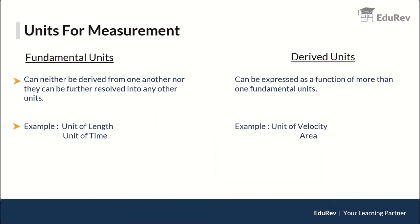Units can be defined as fundamental units and derived units. Fundamental units can never be derived from one another, nor can they be further resolved into any other unit. For example, the unit of length — centimeter or meter — cannot be resolved further or derived from any other units.